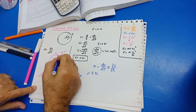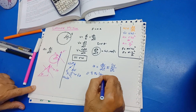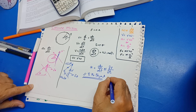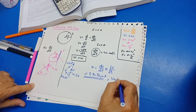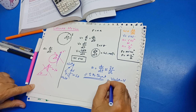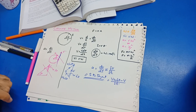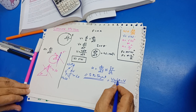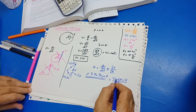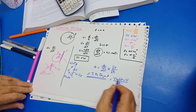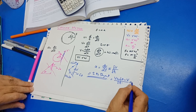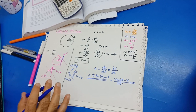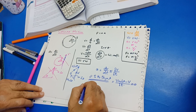For the component parallel to the tangent, we get (v·cos(δθ) − v) / δt. Since δθ is very small, cos(δθ) ≈ 1, so v·cos(δθ) − v ≈ 0. Therefore, the component of acceleration in the direction of velocity — that is, the tangential acceleration — is zero.